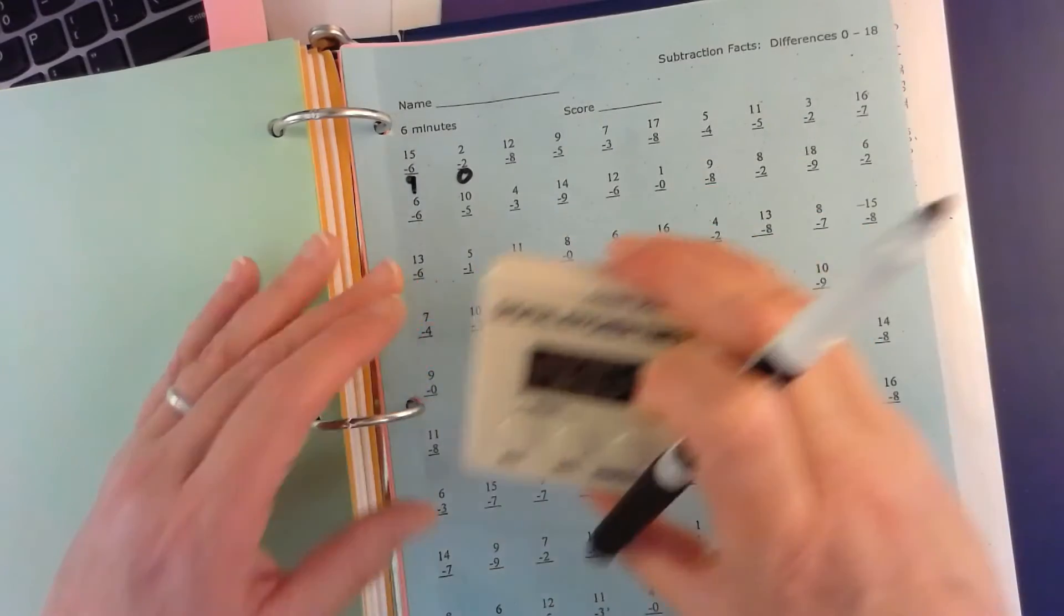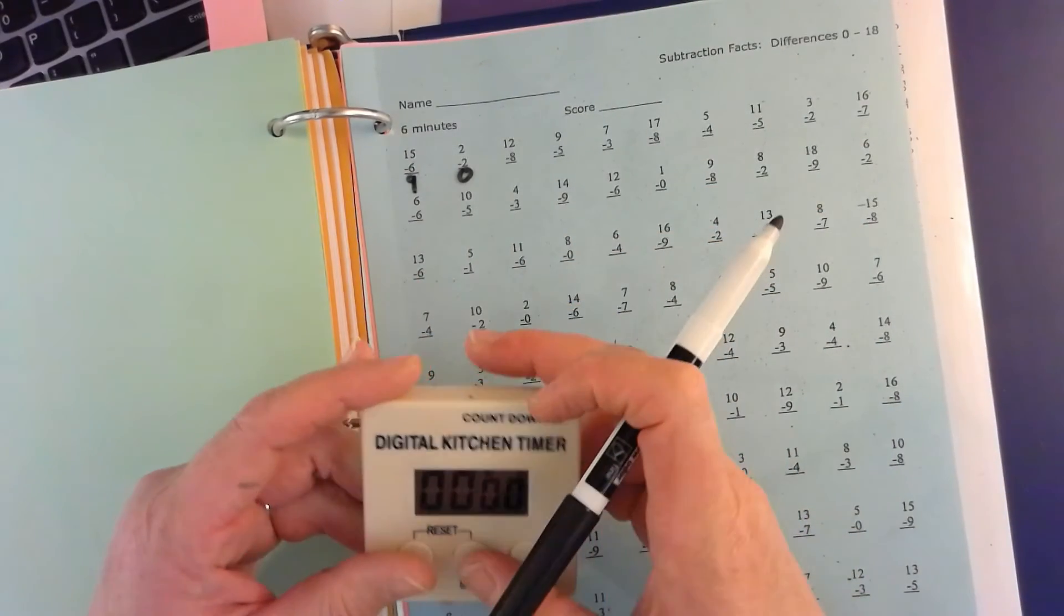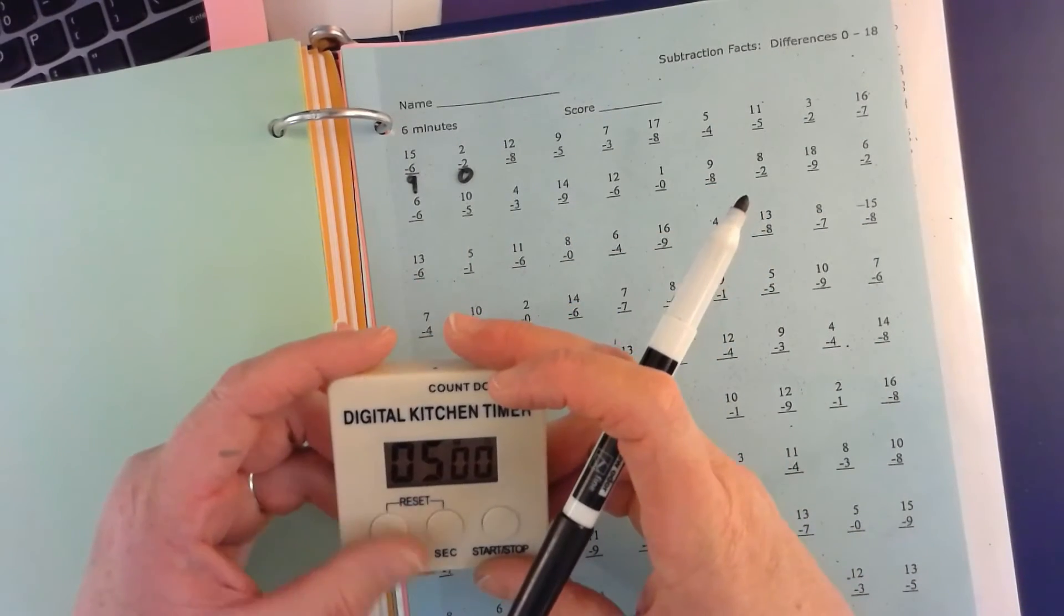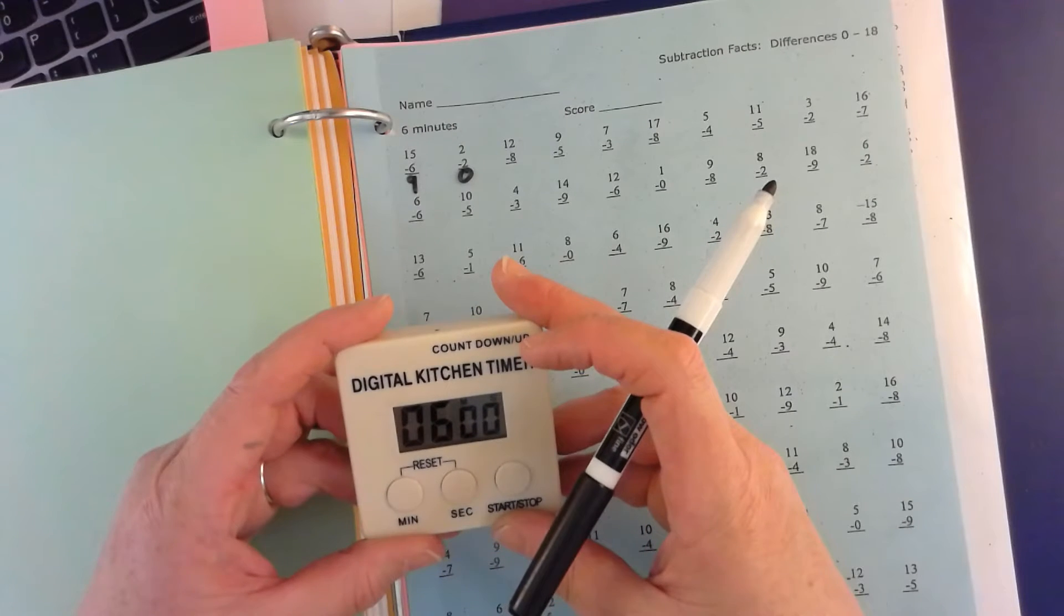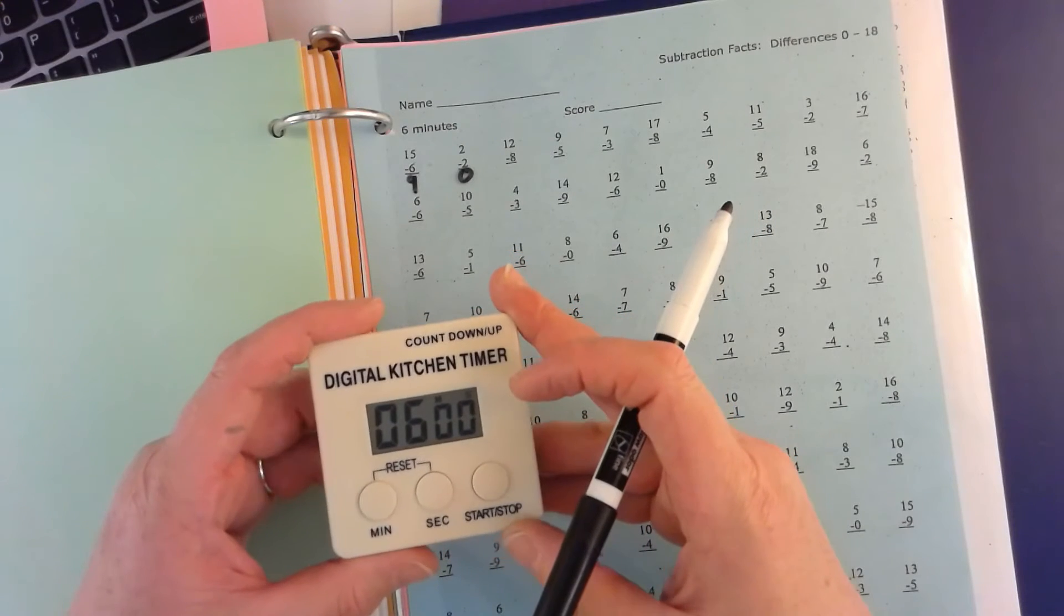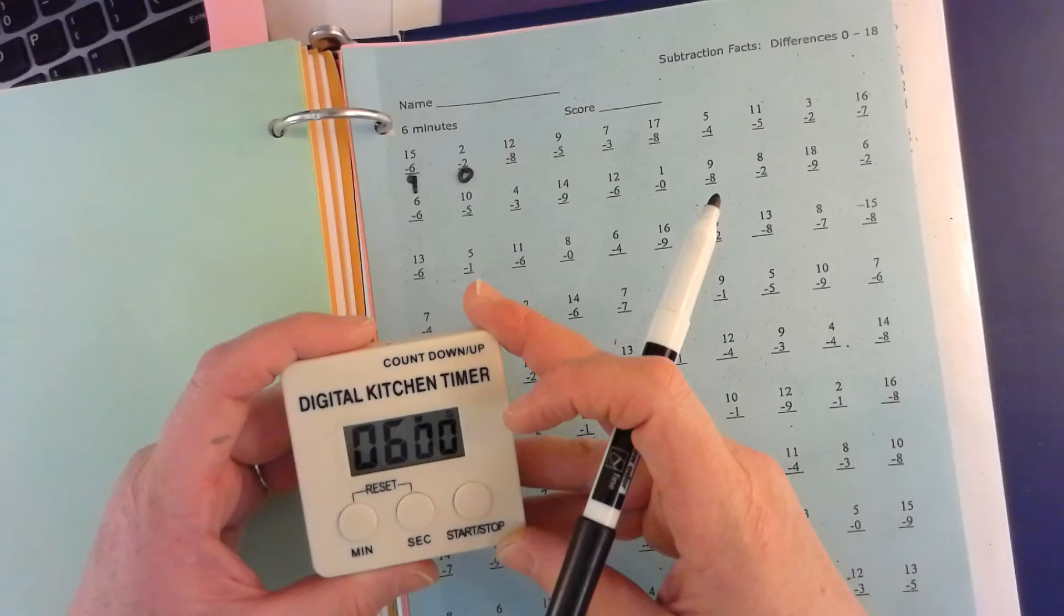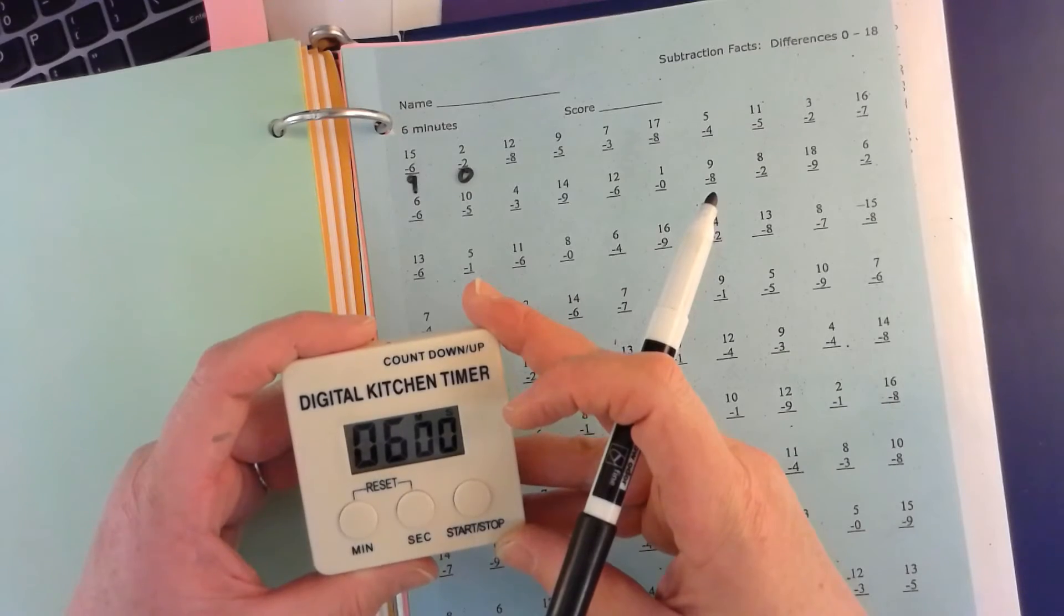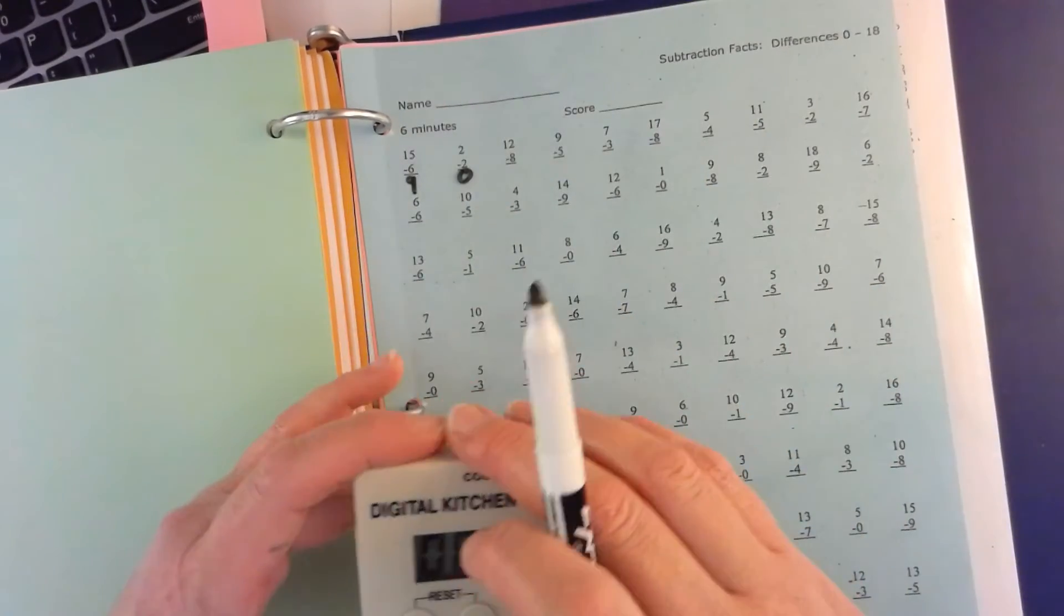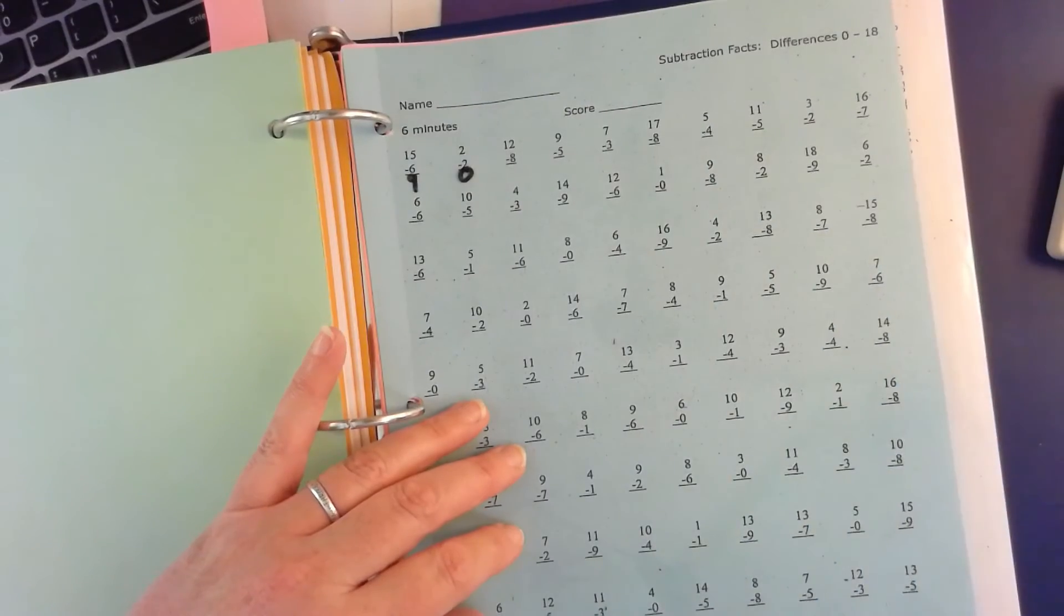Sorry I forgot to hit, so subtraction is six minutes. Subtraction is six minutes and I have this written on your check-off sheet. So you'll do this for six minutes, see how many you can get.